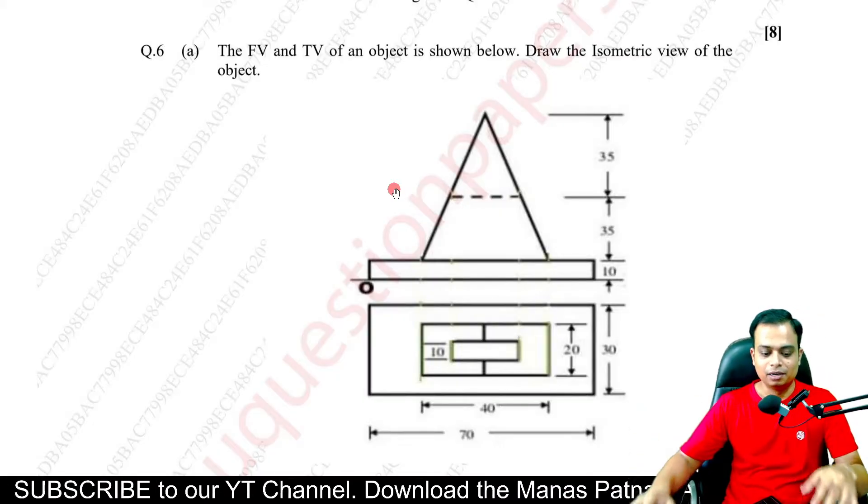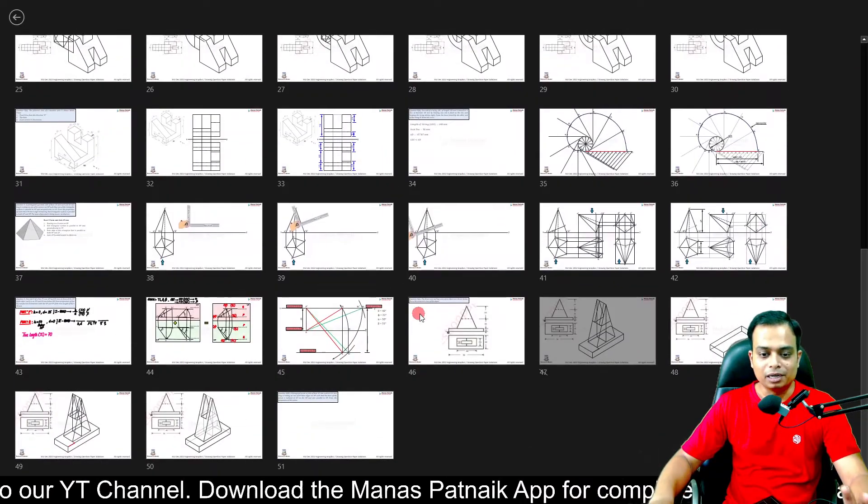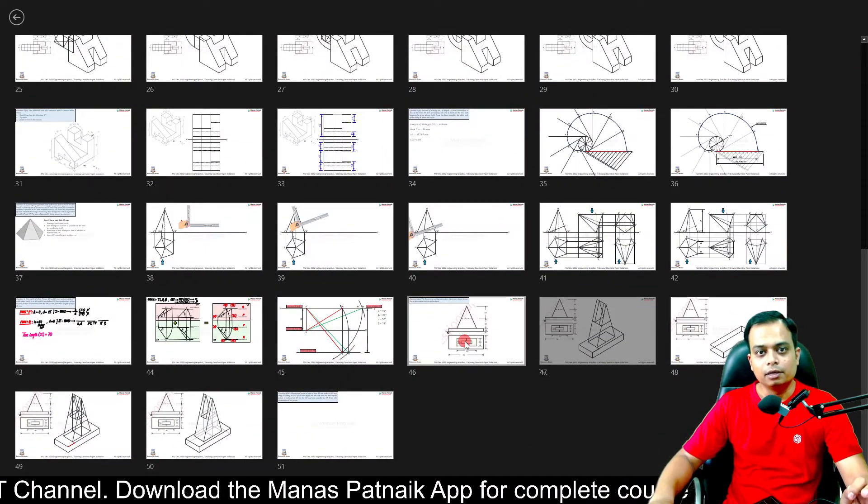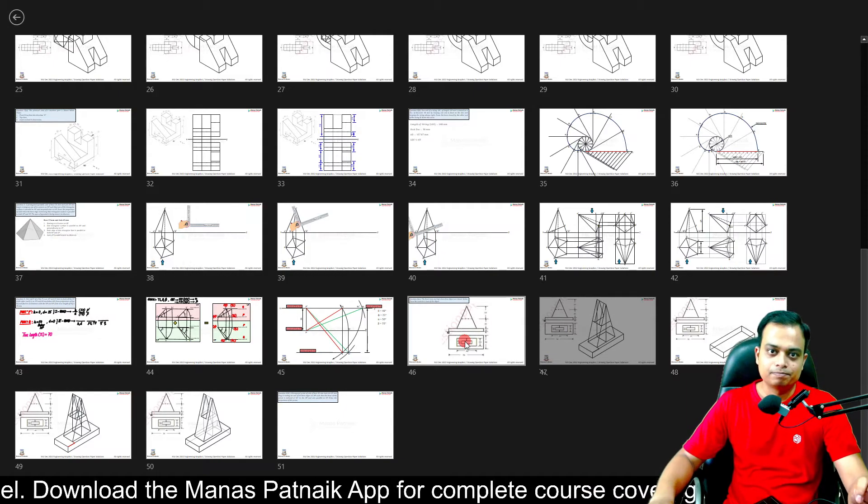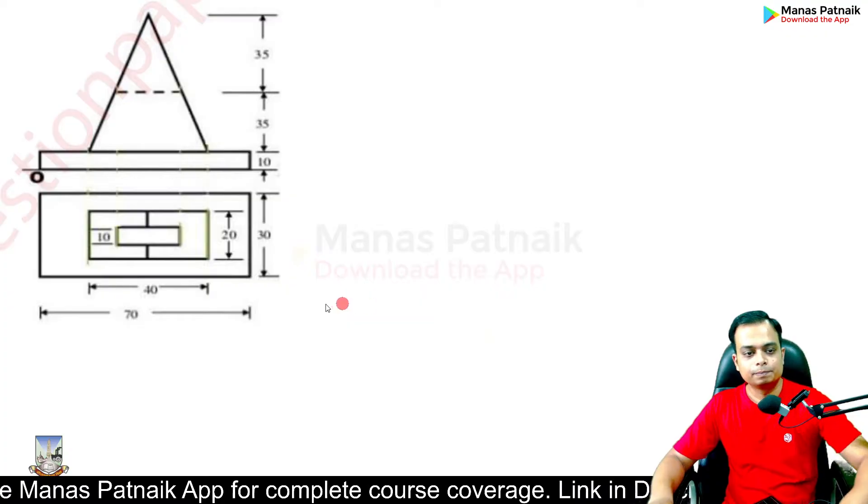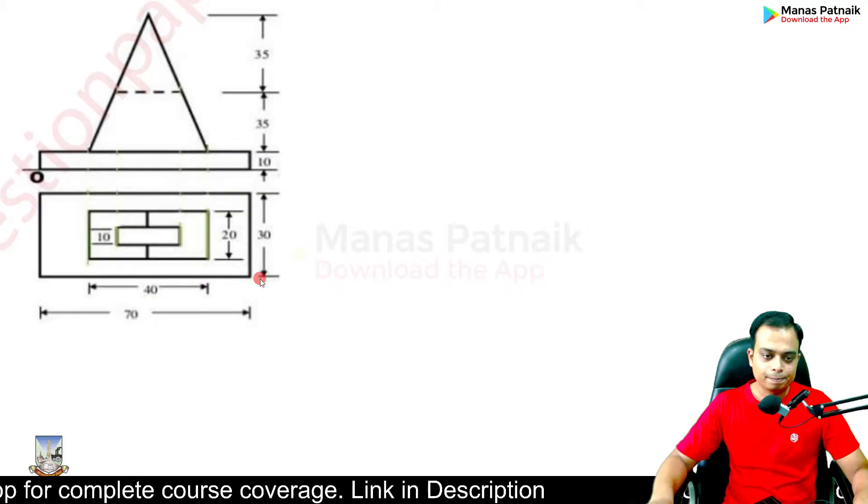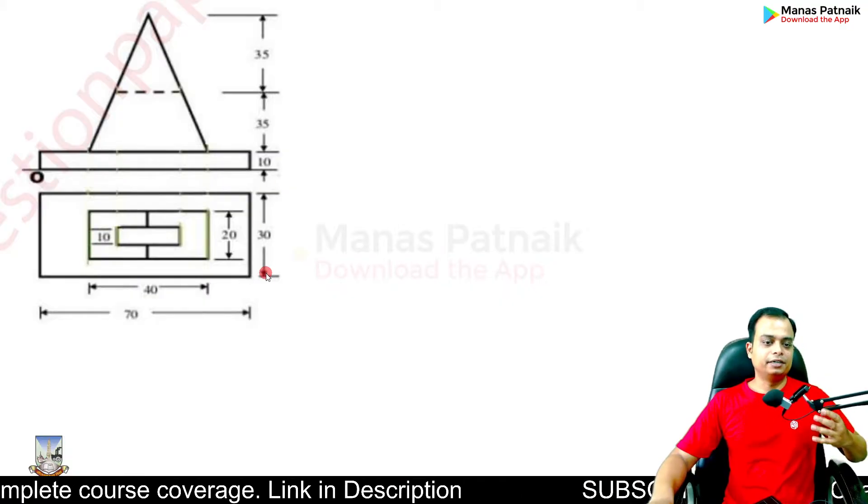Let's study both the front and top view simultaneously and we'll try to figure out the maximum length, width and height. Here we go, just take a look at this. What is the length? The length happens to be 70. What is the width? So it is 30.